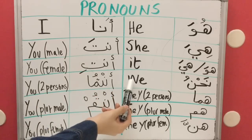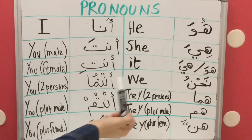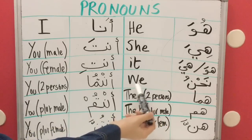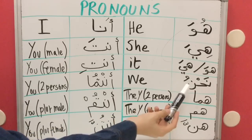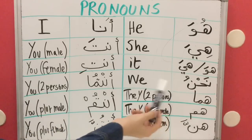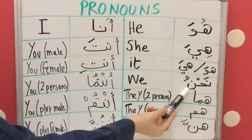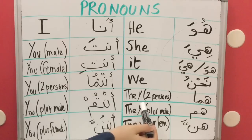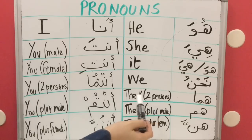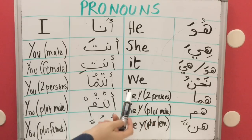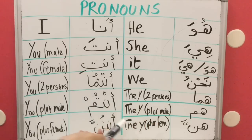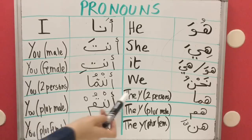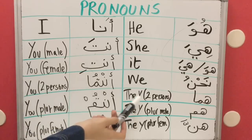Now, 'we'. Also, 'they' is divided into three parts. 'You' was five parts; 'they' is three parts.